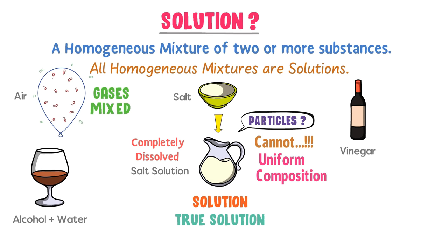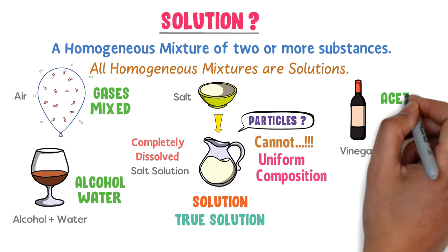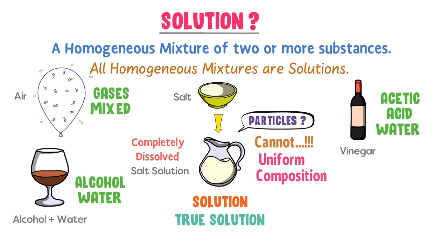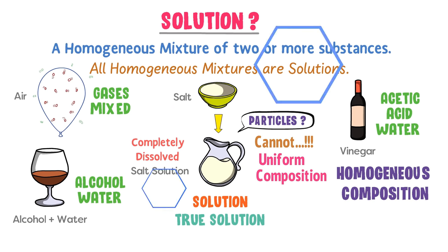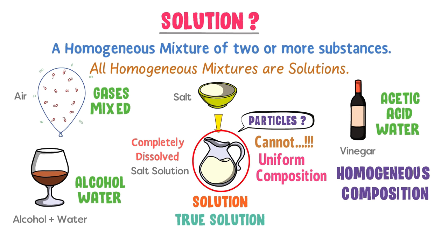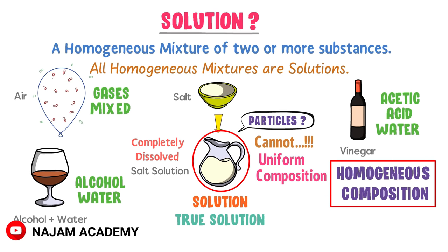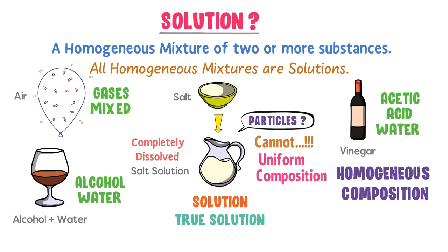Some other examples of solution are air, alcohol plus water, and vinegar. Air is different gases mixed together to form a homogeneous mixture. Alcohol plus water form a uniform composition, and vinegar — acetic acid dissolved in water — also forms a homogeneous composition. In a solution, particles are so small that we cannot spot them with the naked eye.